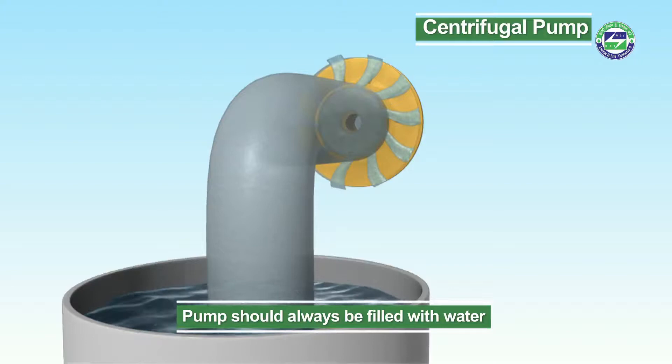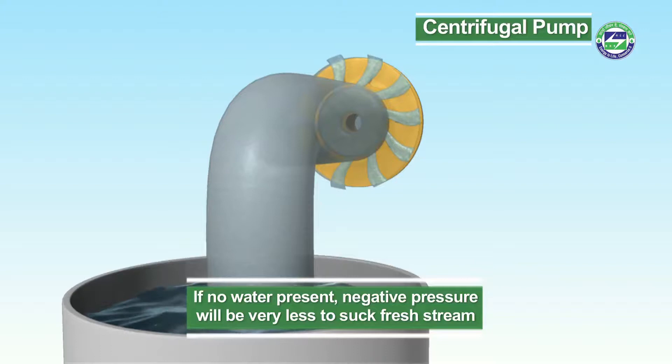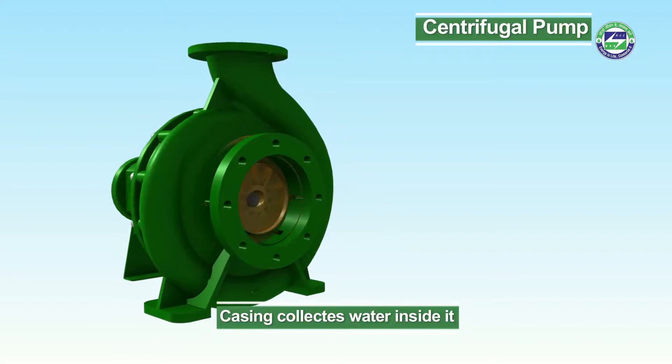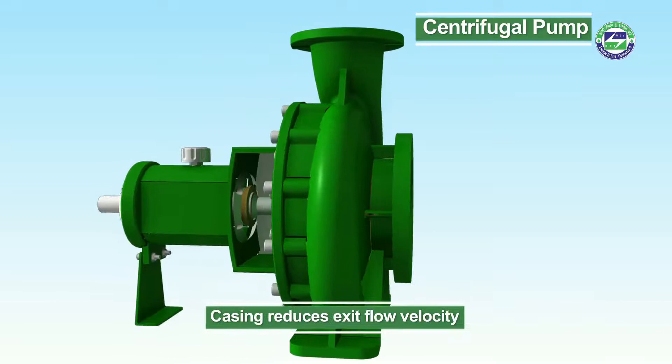The impeller is fitted inside a casing so that water moving out will be collected inside it and move in the same direction of rotation of the impeller to the discharge nozzle. The casing holds freshly added water and reduces exit flow velocity.